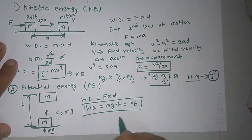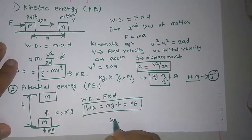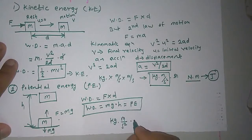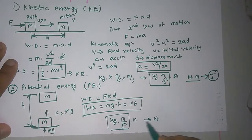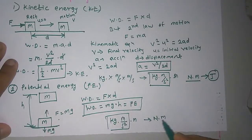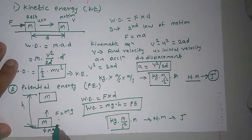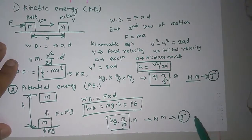Checking the units: M is in kg, g is in m/s², and H is in meters. So kg times m/s² is Newton, and Newton times meter is Joule. So the unit of potential energy is also Joule.